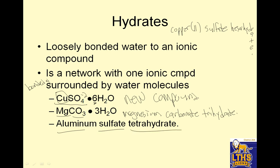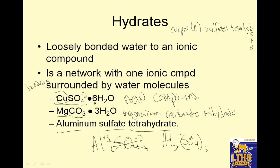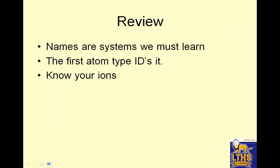Aluminum sulfate tetrahydrate: aluminum's charge is plus 3. Sulfate — I memorized that. Crisscross gives you Al₂(SO₄)₃, and tetrahydrate means · 4H₂O. The names are systems we must learn. First, identify the type of atom — that ID gives you the type of compound. And know your ions; that's probably the hardest part. And crisscross makes you want to jump, jump!